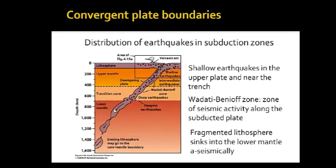At deeper levels in the lower mantle, the subduction zone starts disintegrating, breaking up into individual fragments. These fragments then individually and slowly sink down to perhaps the core-mantle boundary into the deeper mantle — this is sometimes called the graveyard of plates or graveyard of oceanic lithosphere. They slowly get hotter and more similar to the surrounding mantle until they can no longer be distinguished from it using geophysical methods.